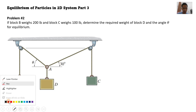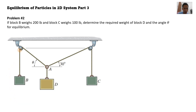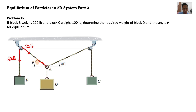For block B, it has a weight of course that is acting downward — that is 200 pounds. For pulleys, whatever force acts on one side also acts on the other side. So this is also 200 pounds, and the force pulling on this side is also 200 pounds.